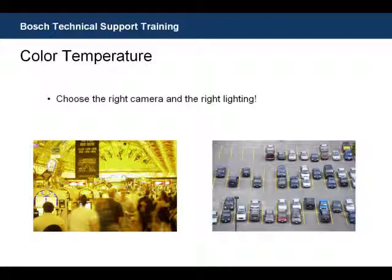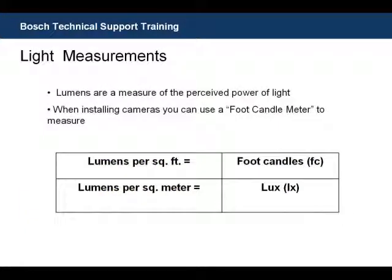When we measure light, we use certain terms such as lumens and lux. Lumens are a measurement of the perceived power of light. Lumens per square foot equals foot candles. A foot candle is a scientific measurement of a standard candle one foot away from a one-foot-square surface and the brightness that it produces.